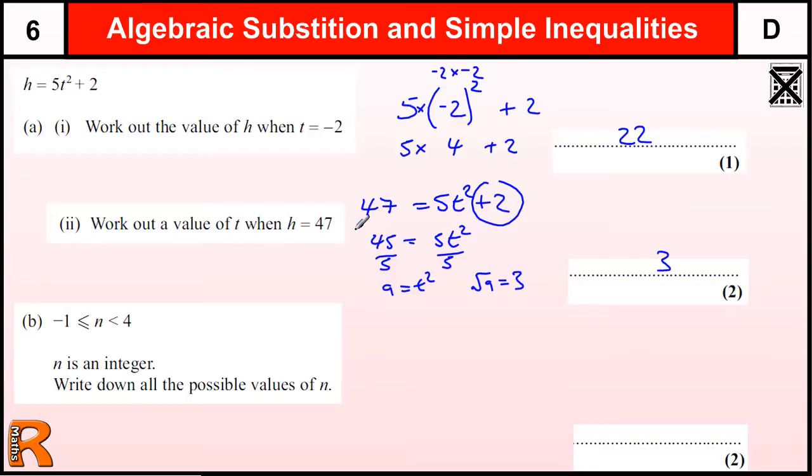We could do it that way, or we could do some trial and improvement. We could just guess some values. So we could start with 1: 1 squared is 1, times 5 is 5, plus 2 is 7. We know that minus 2 gives us 22, so 2 would give us 22 as well. We could just work up from there. Although it's non-calculator, it would take some time, but it's worth trying if you're not sure how to do it another way.